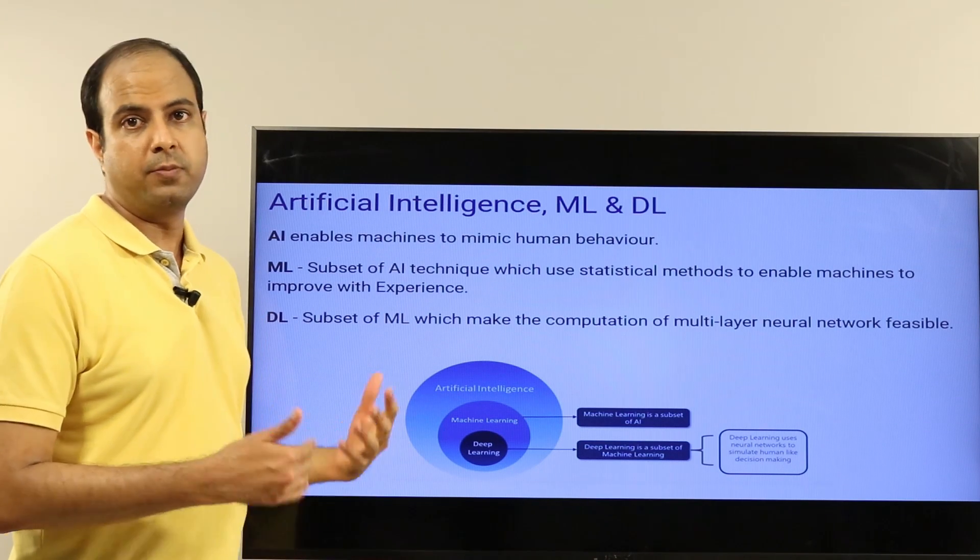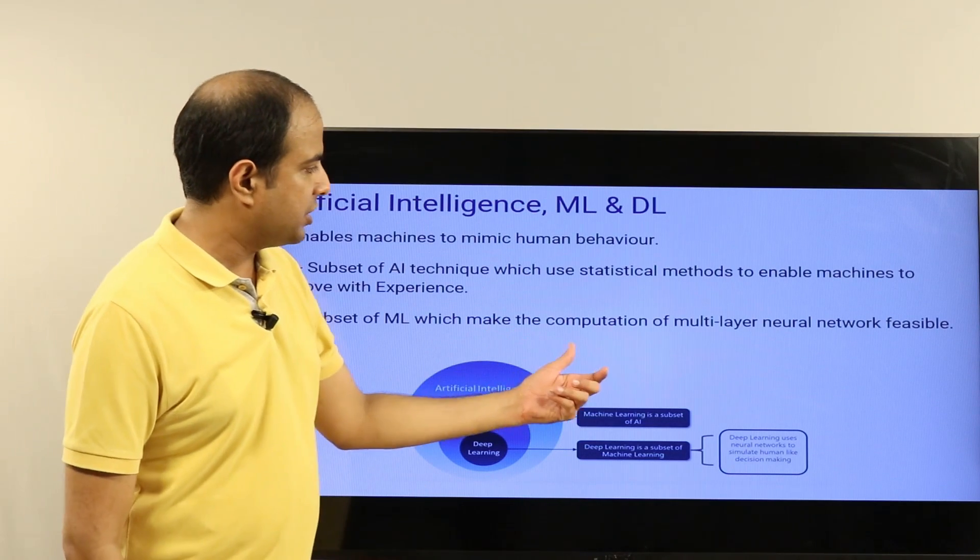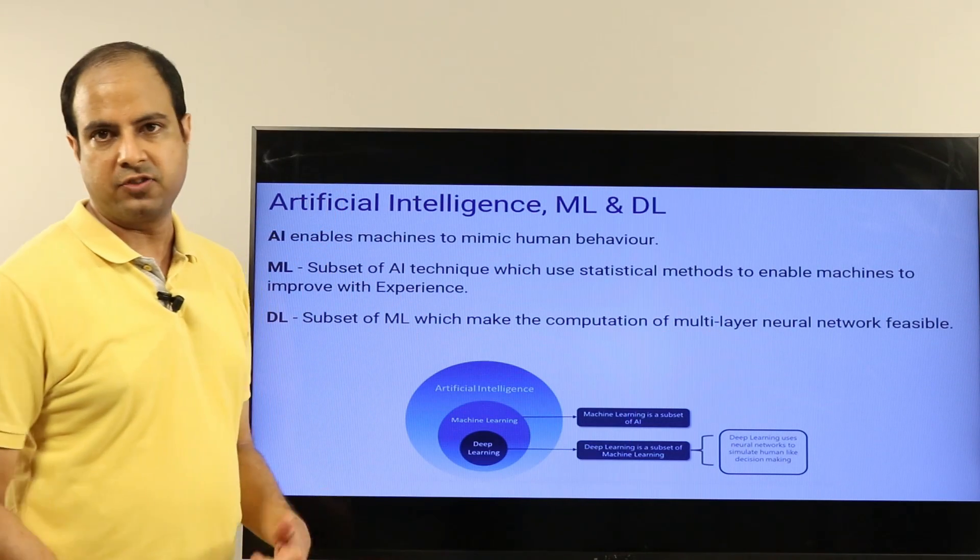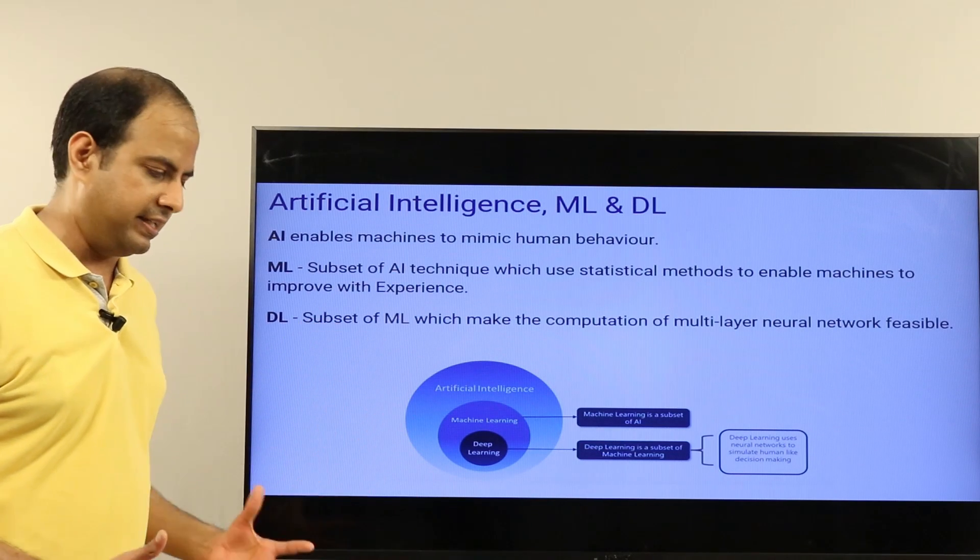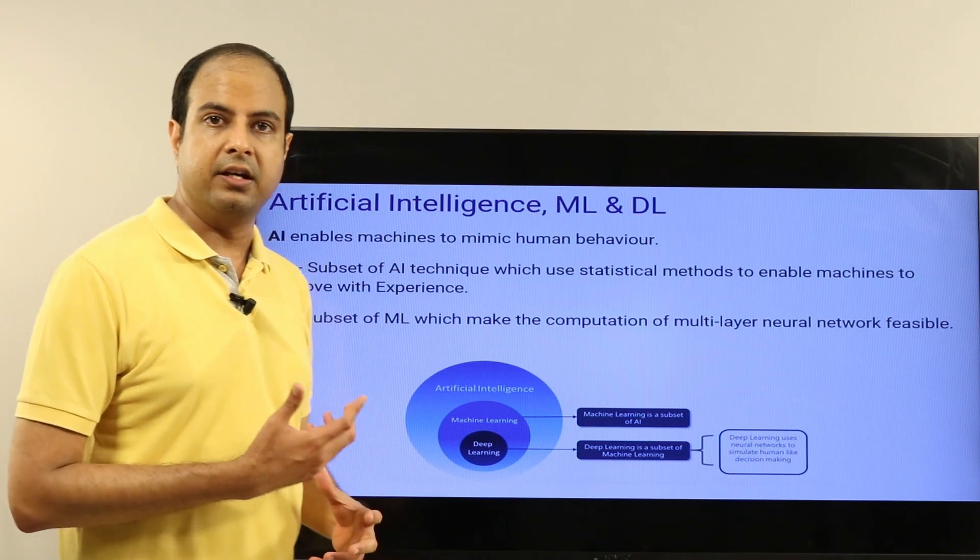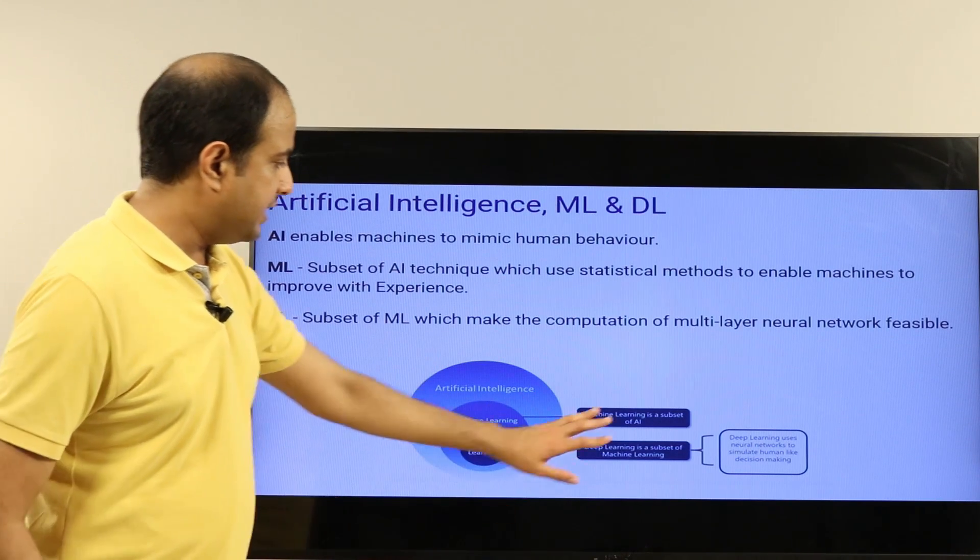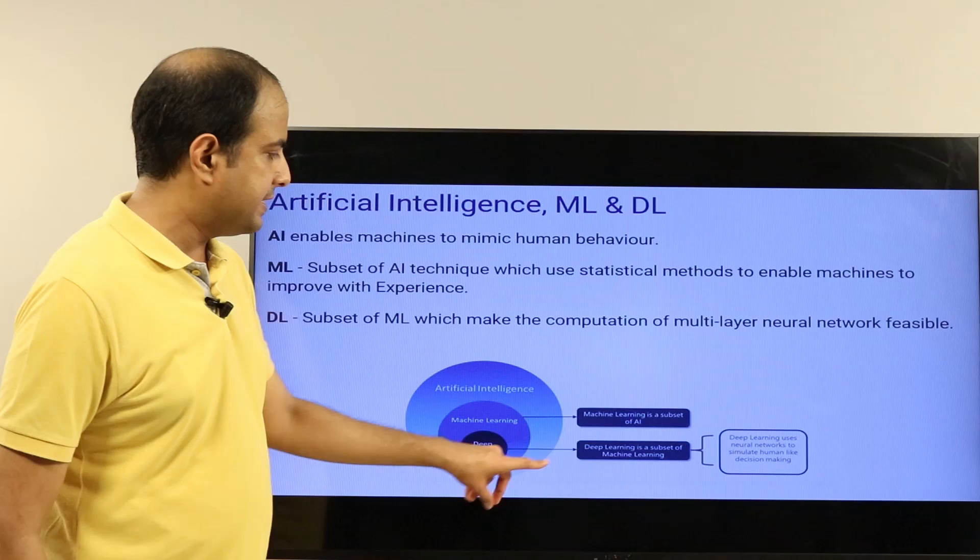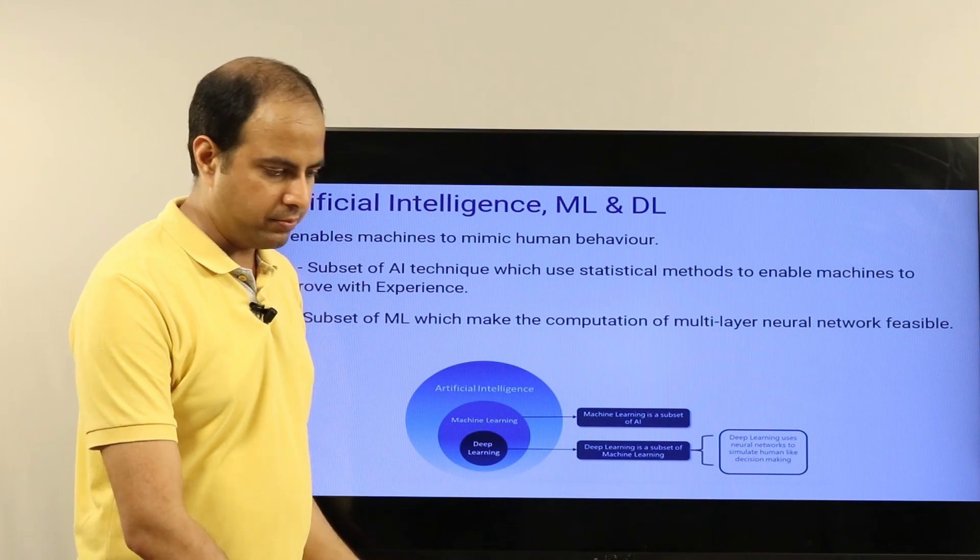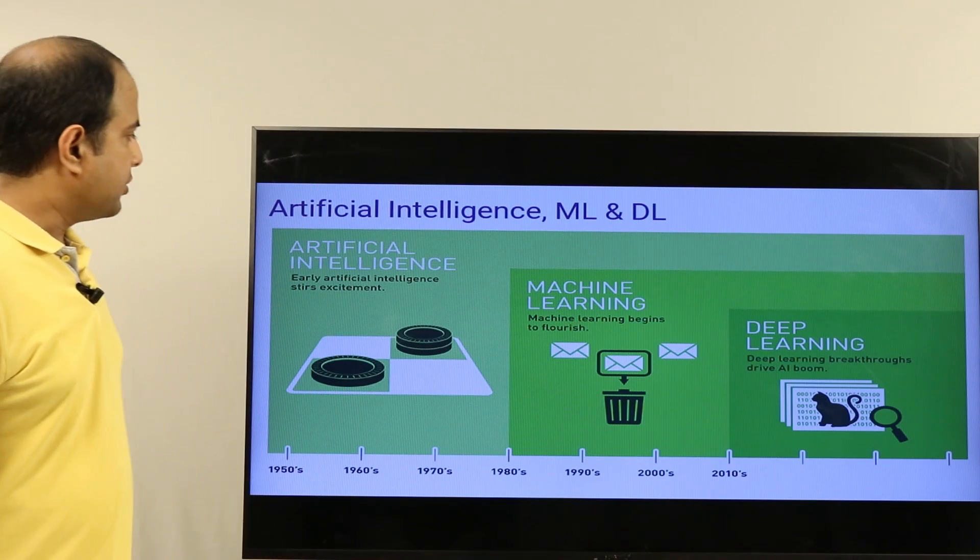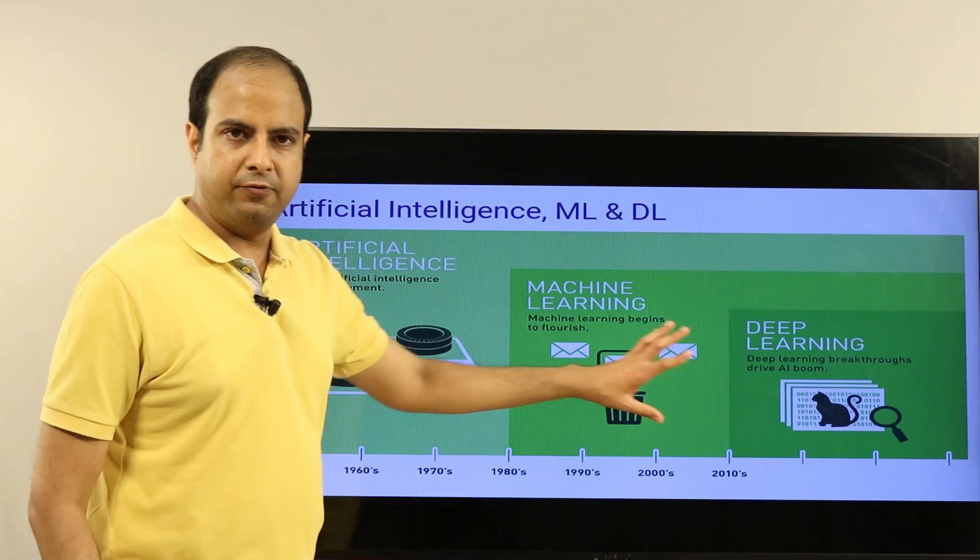Deep learning is a subset of machine learning which makes the computation of multilayered neural networks feasible. Neural networks is a way of doing machine learning, and deep learning is an advanced way of doing machine learning using neural networks. As this picture shows, machine learning is a subset of AI and deep learning is a subset of machine learning. Deep learning uses neural networks to simulate human-like decision-making.